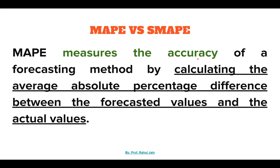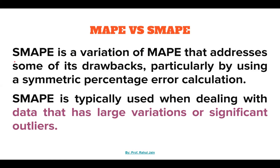MAPE measures the accuracy of a forecasting method by calculating the average absolute percentage difference between the forecasted value and the actual value. Whereas Symmetric Mean Absolute Percentage Error is a variation of MAPE. It addresses some of MAPE's drawbacks, particularly by using a symmetric percentage error calculation. We need to clarify what symmetric percentage error calculation means, and we are going to explore that.